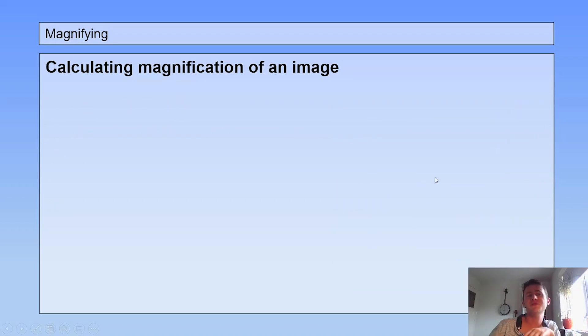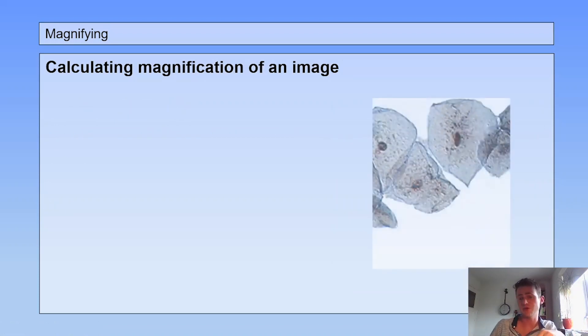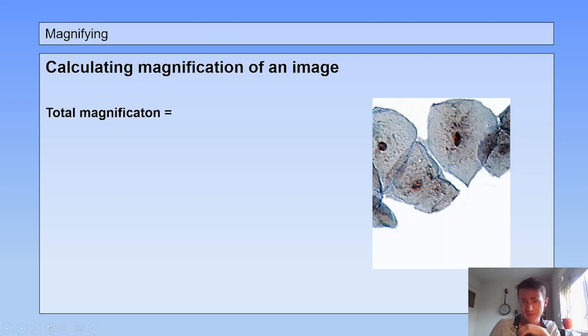Now if you want to calculate the magnification of an image, so you have a picture of a microscopic picture or a drawing and you want to know how many times this was magnified, the total magnification is the size of an image divided by the size of the real object. So I just made some numbers up. Just in theory, imagine that the size of this image on the picture is three centimeters, and you know that in real life these animal cells are 0.001 centimeters.